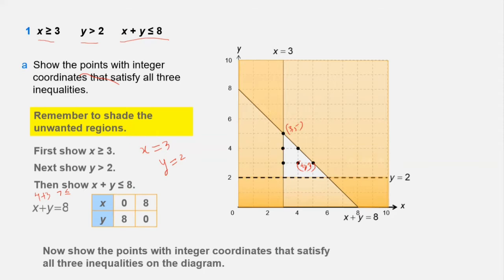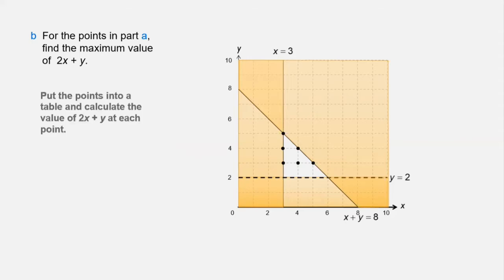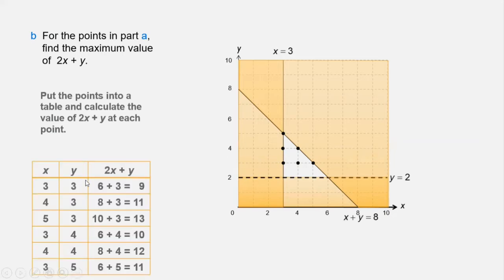Moving ahead with the same question, Part A asks: find the maximum value of 2x + y. To find the maximum, put the corner points into a table and calculate the value of 2x + y at each point. For example, at point (3, 3): 2×3 + 3 = 6 + 3 = 9.